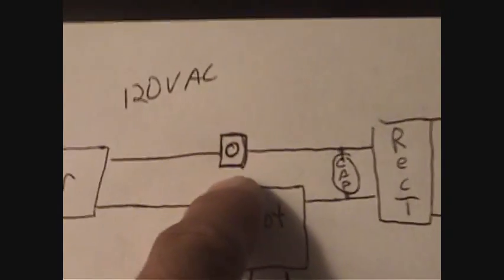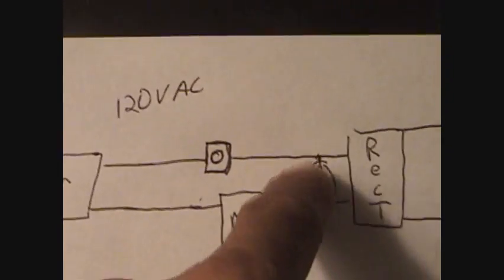Right here is a dimmer switch, right here's a capacitor.